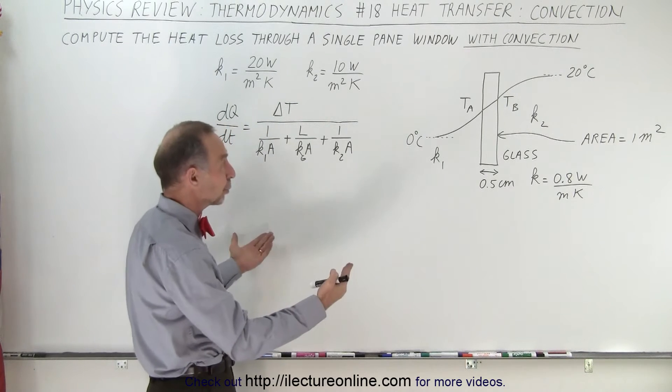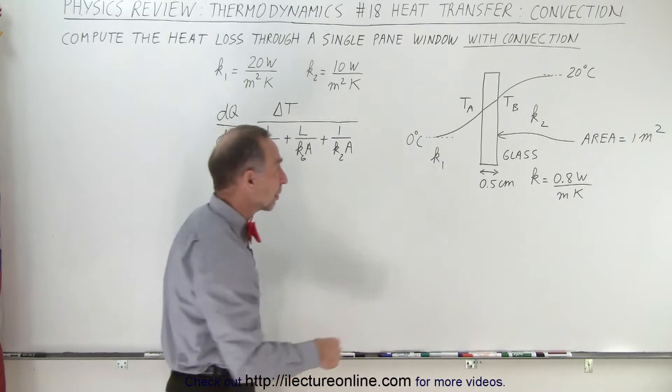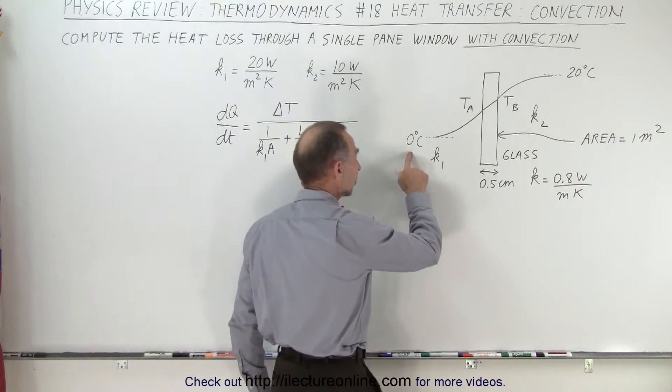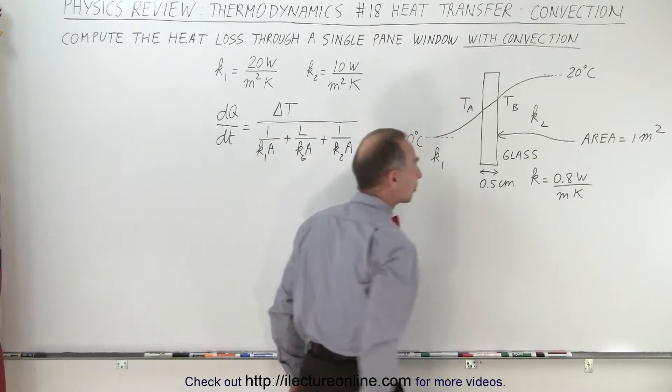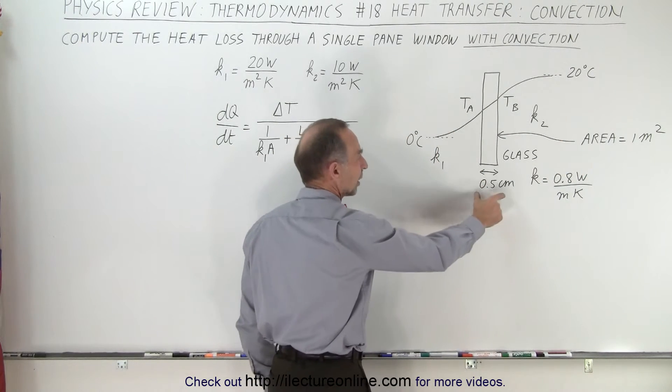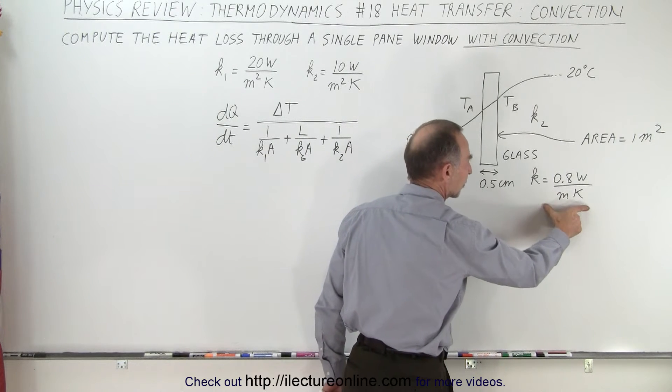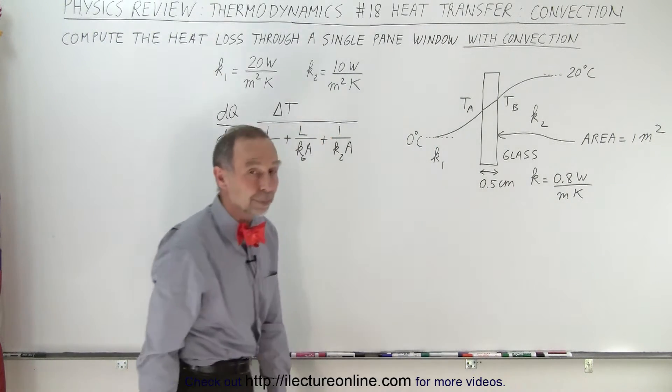Let's say we have a single pane window and we want to know the heat loss to the window when the temperature outside is 0 degrees Celsius and the temperature inside is 20 degrees Celsius. The area of the window is one square meter, it's made out of glass, it's 0.5 centimeters thick.